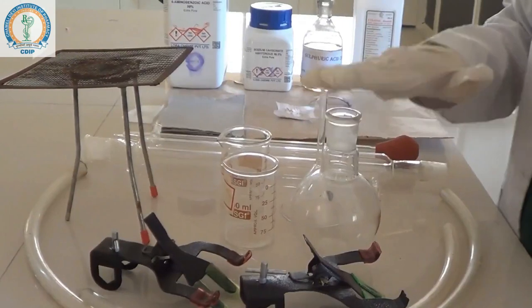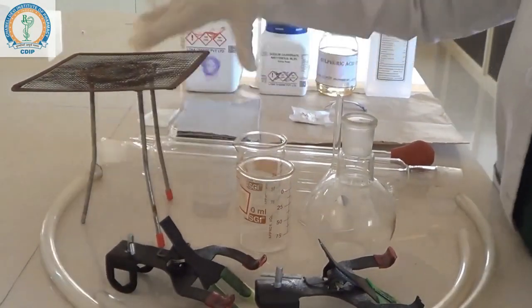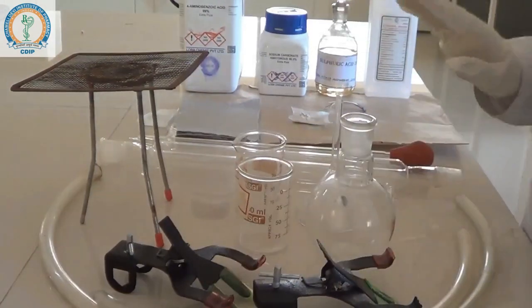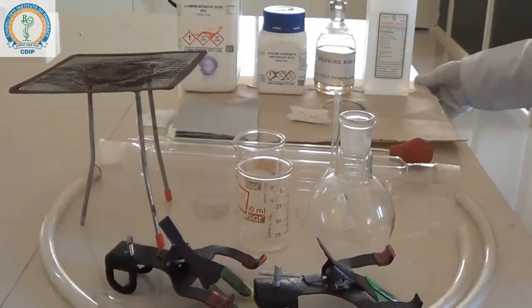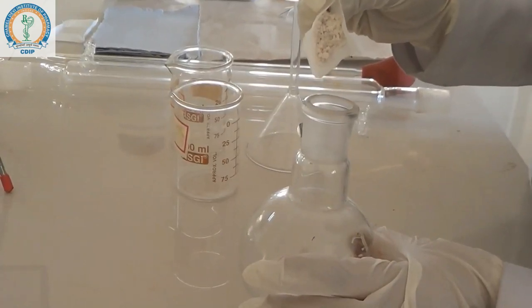We also need a round bottom flask, tripod, wire gauze, clamp, and glass rod. Now we are going to take a weighed amount of para-amino benzoic acid in the flask, which is 0.4 grams.